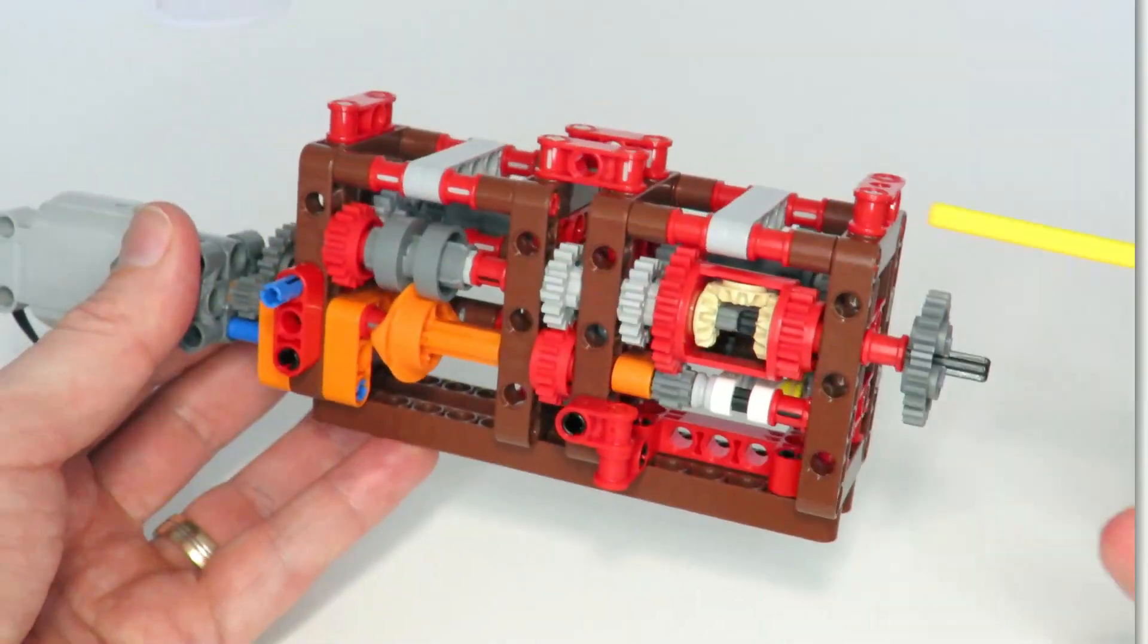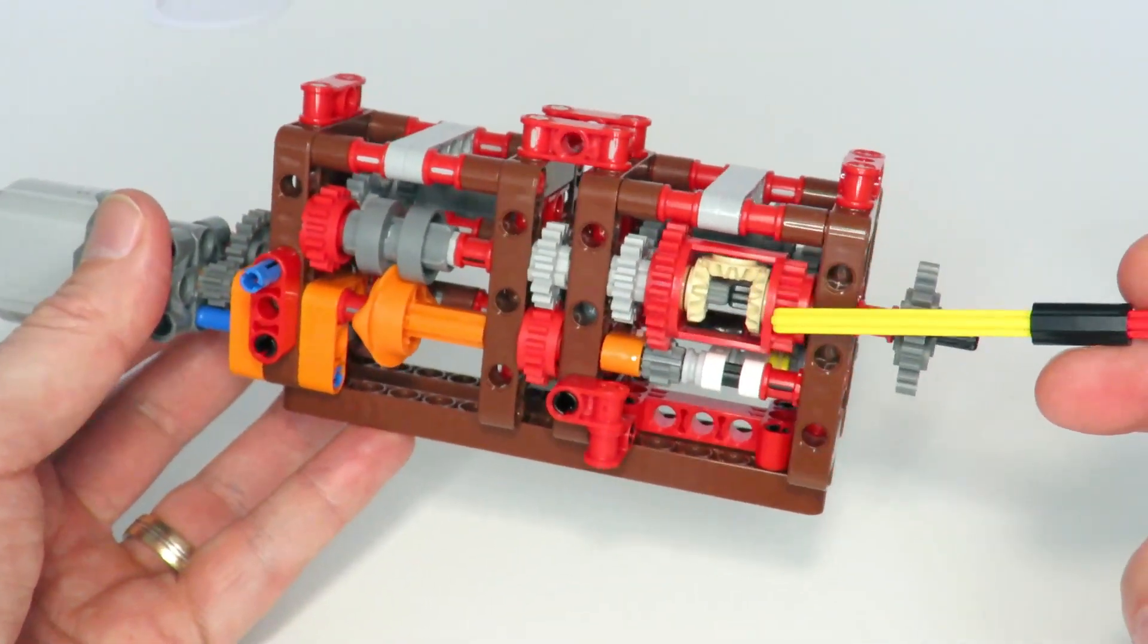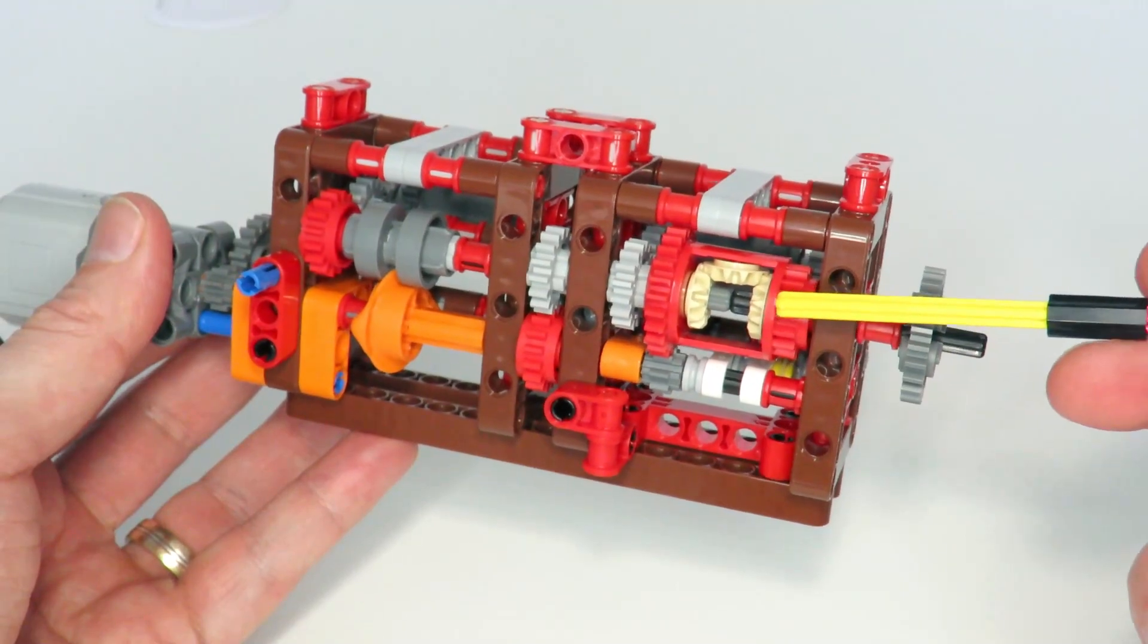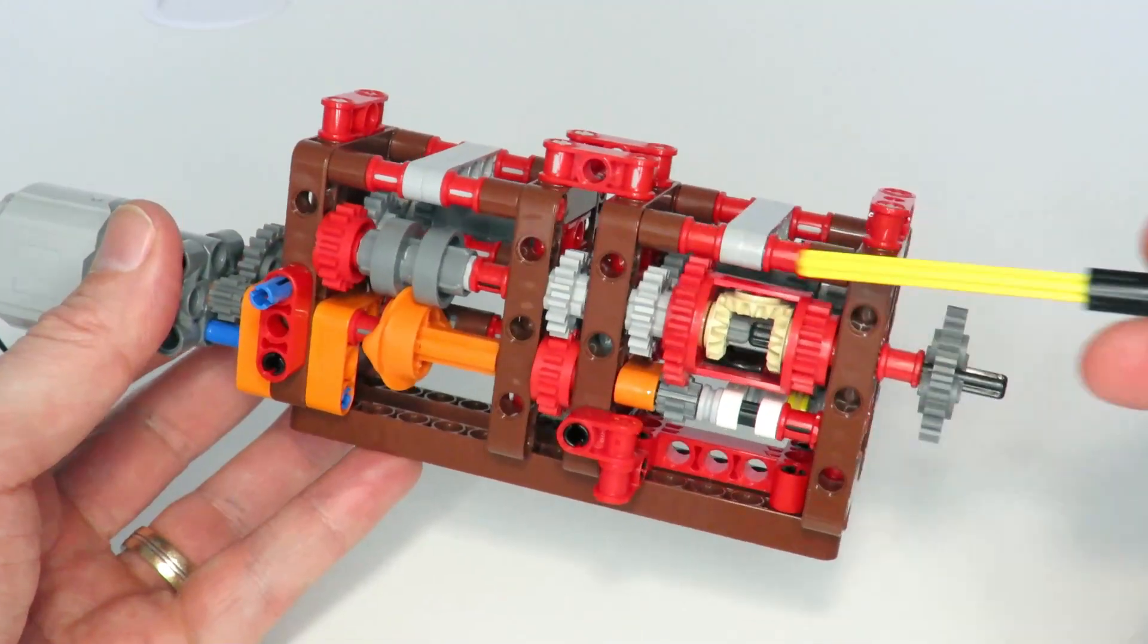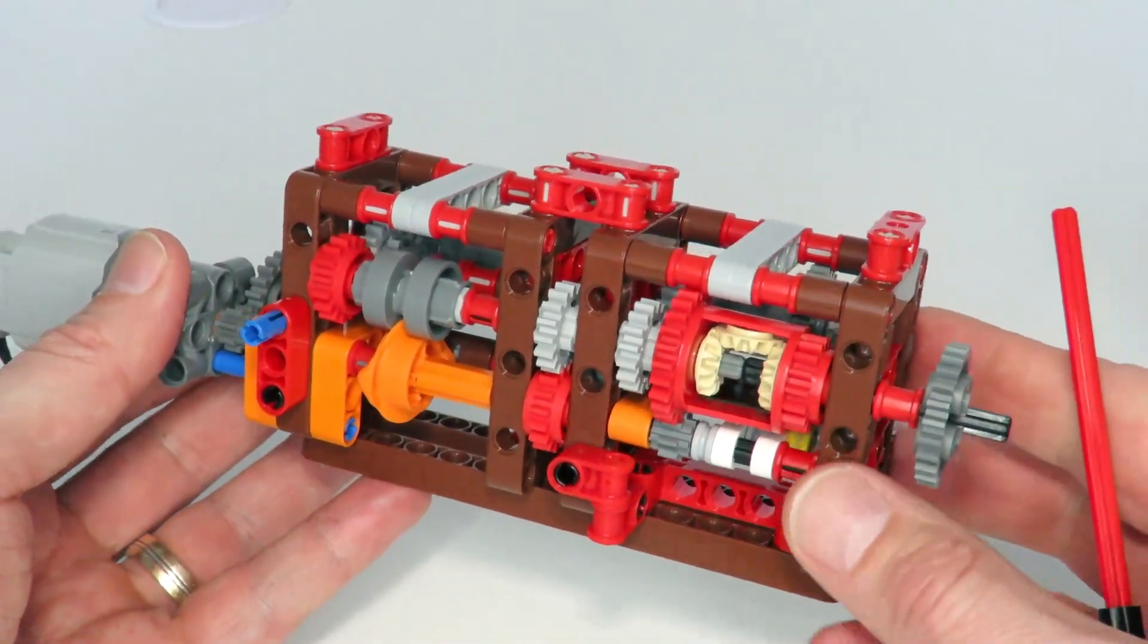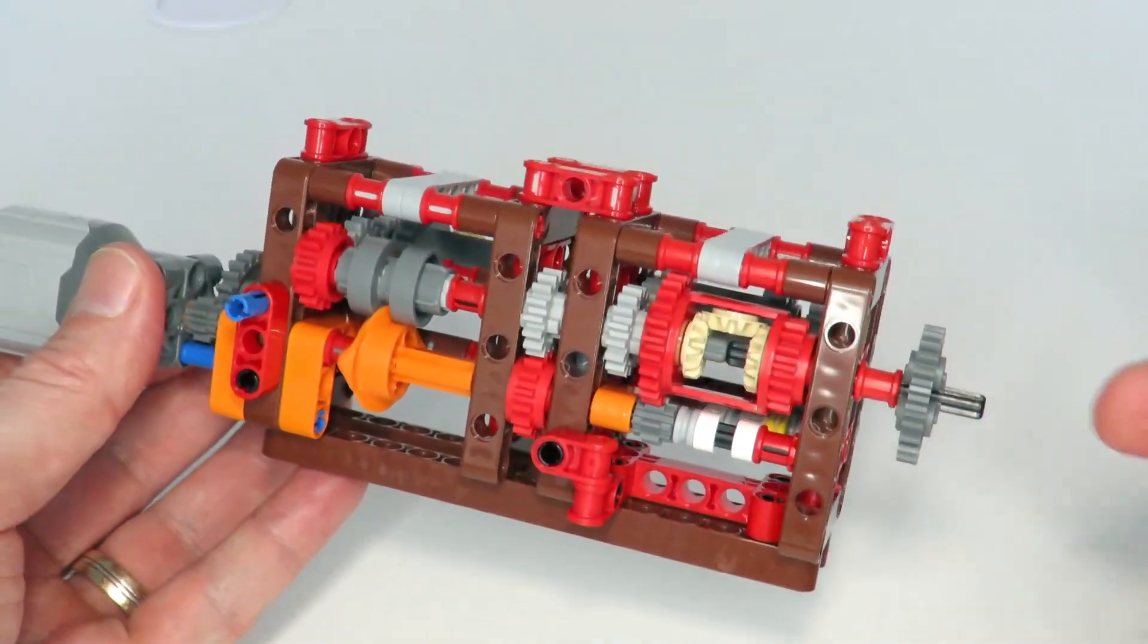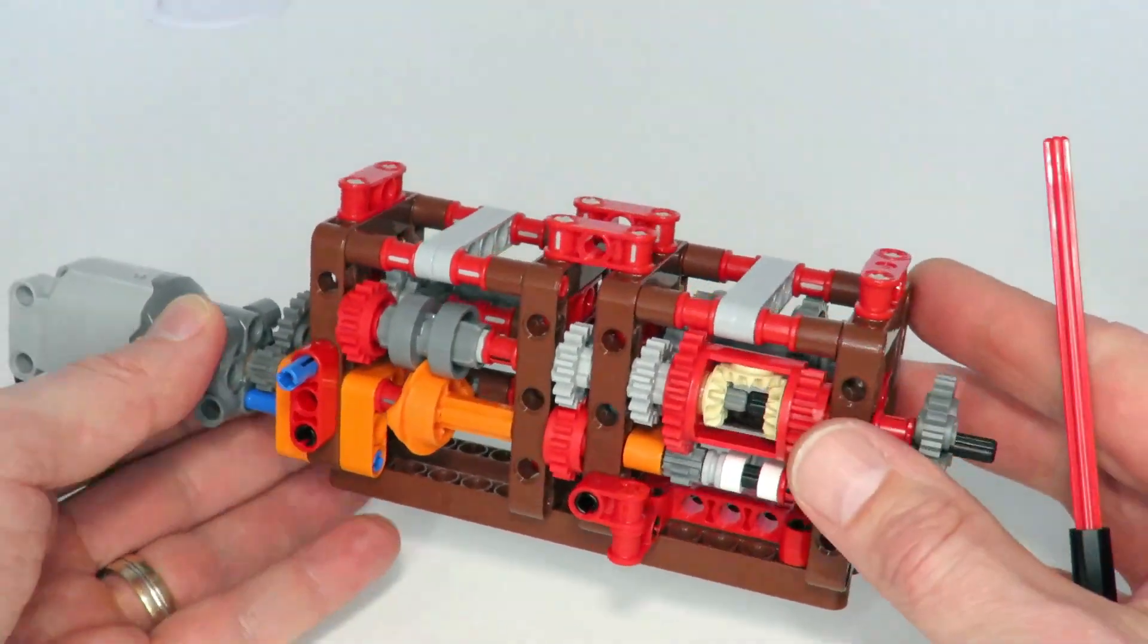So those are the four main parts and those are the ones that we're trying to reduce their size with the same functionality. So I started by thinking of other ways of implementing this torque detection mechanism. We normally use a differential like this and it allows us to detect the torque between an input axle and an output axle.